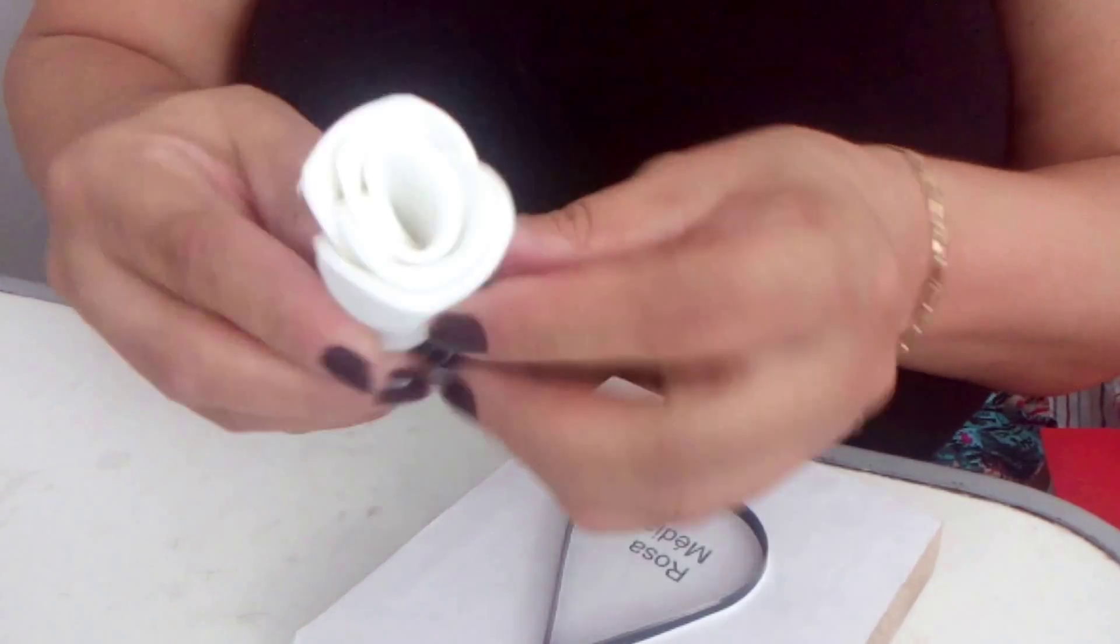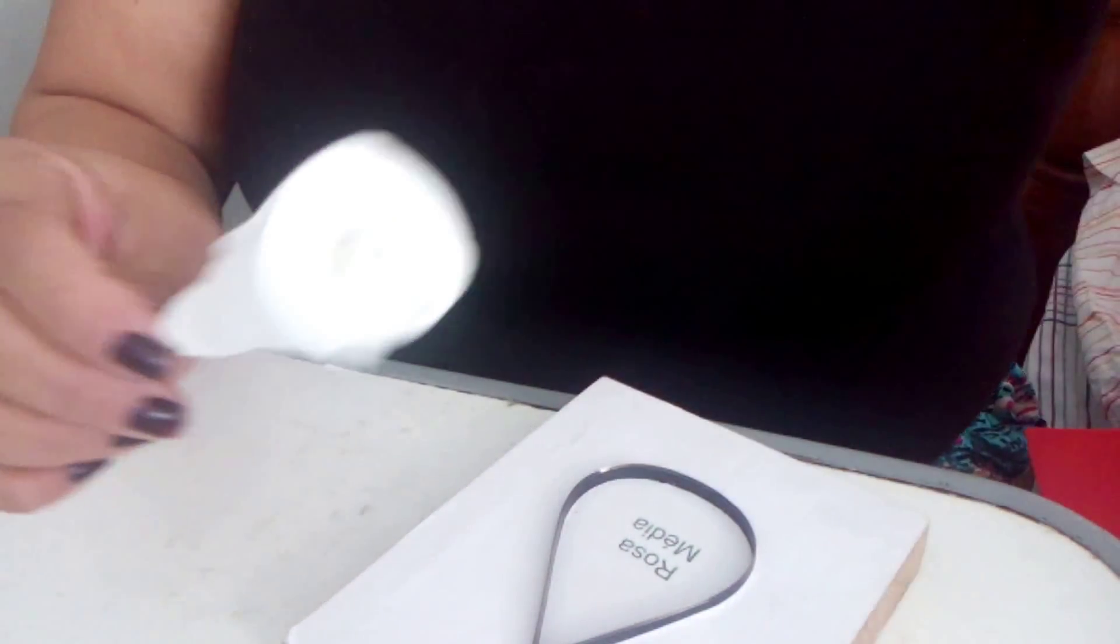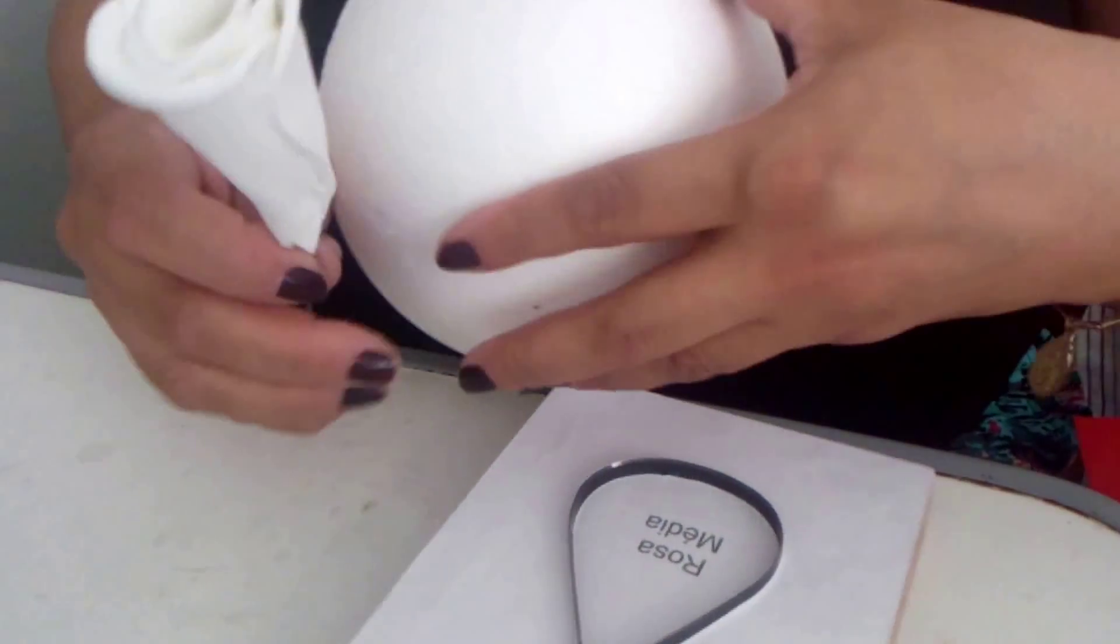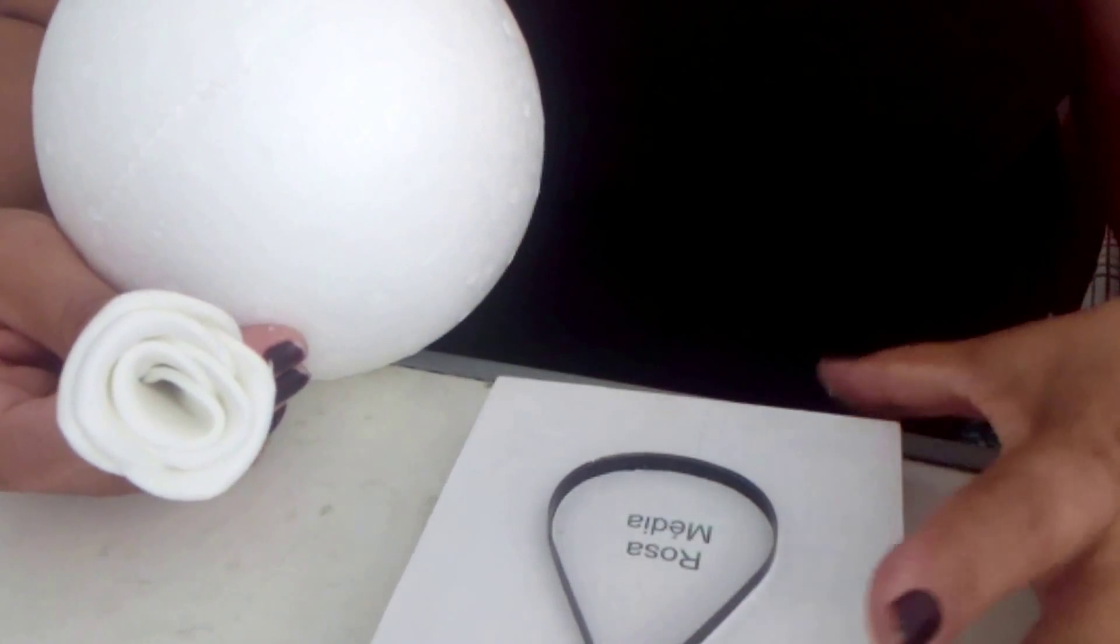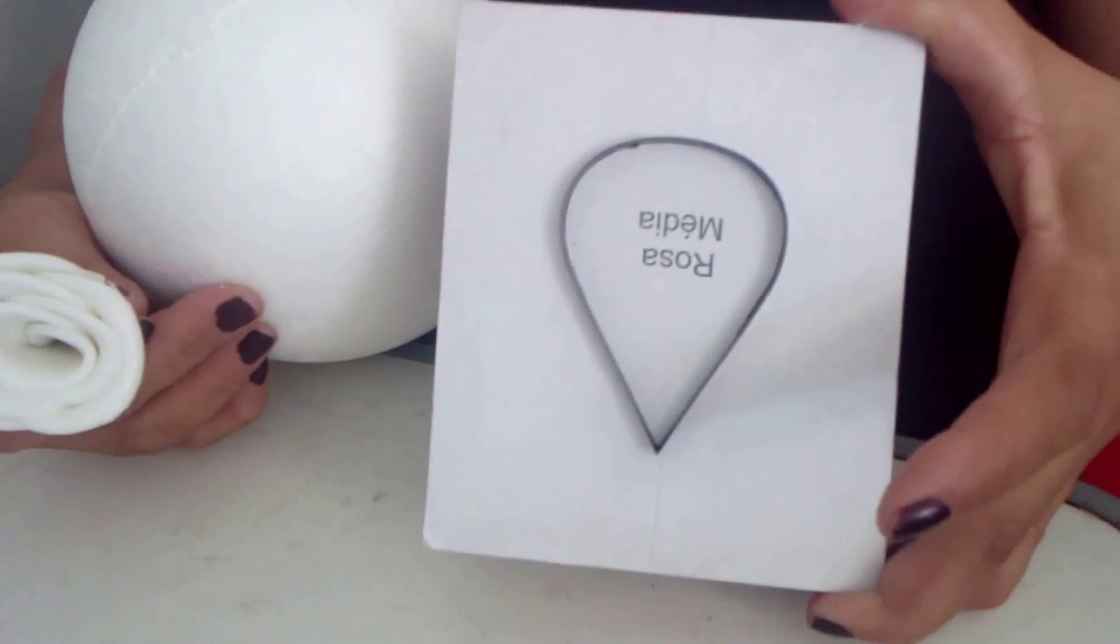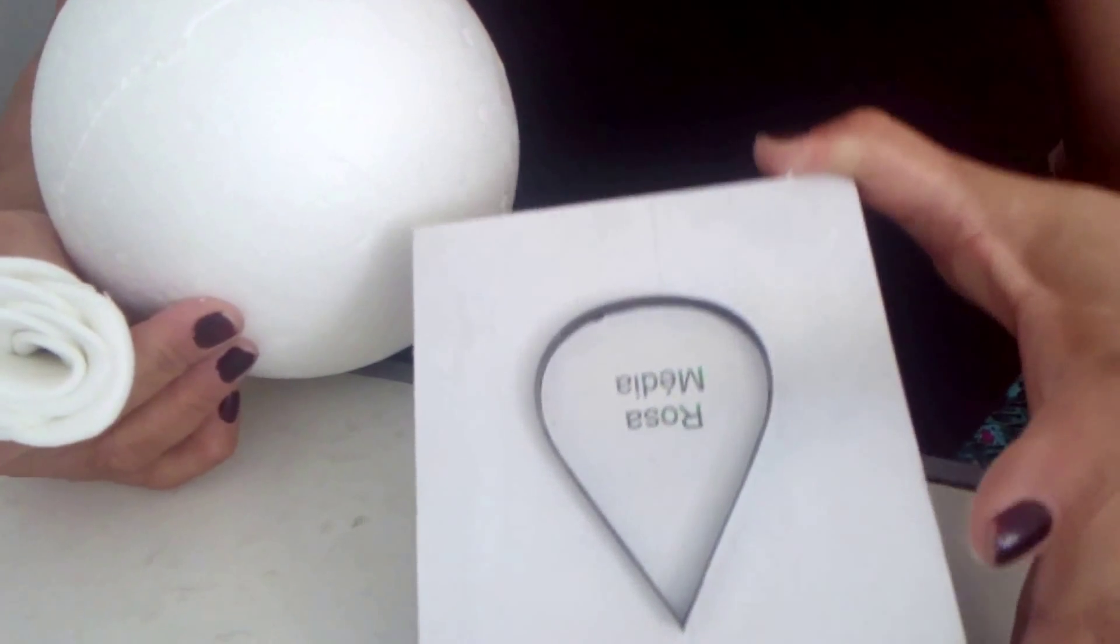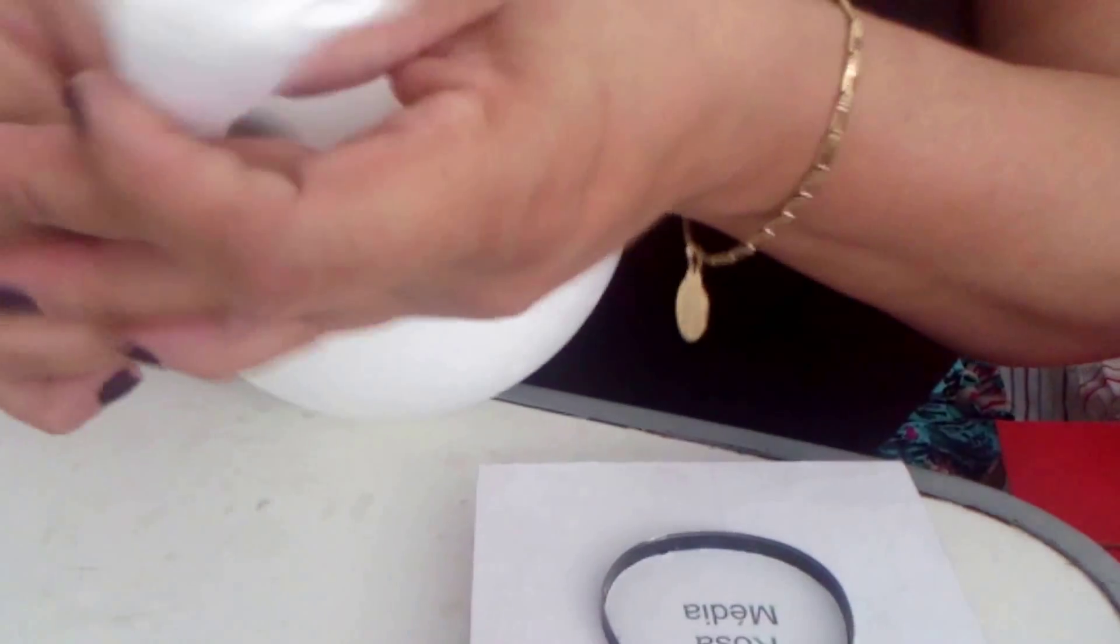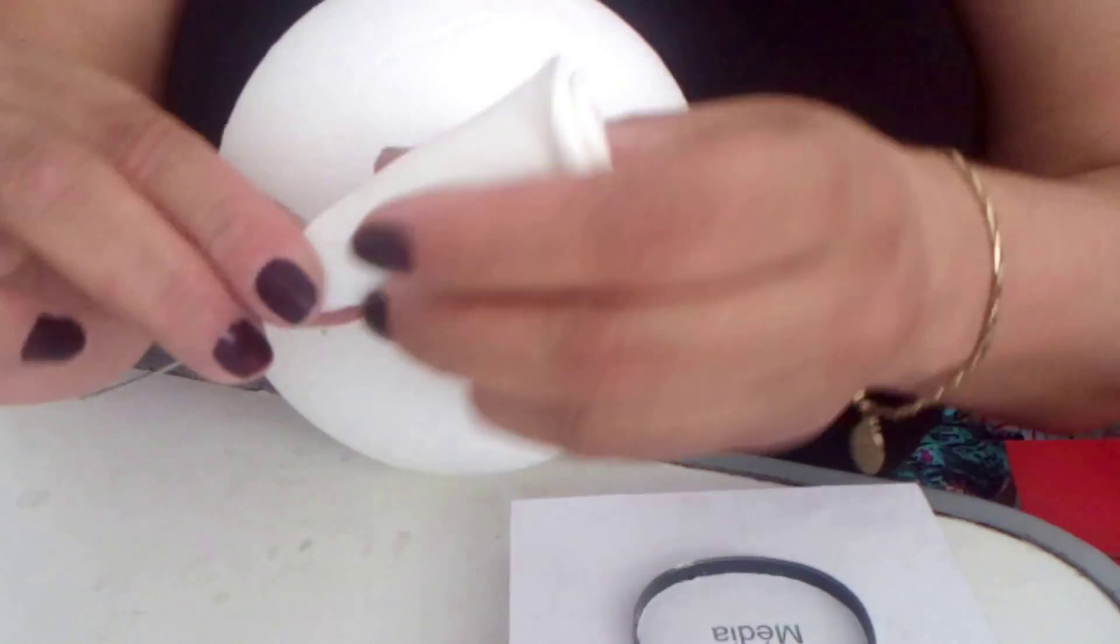And here the button is done. See? Later I can cut this here if I want. If not, if I'm going to place it on a styrofoam ball, for example, if I want to make a topiary and don't have the medium rose crimper, no problem. Buy the Criativa cutting die.